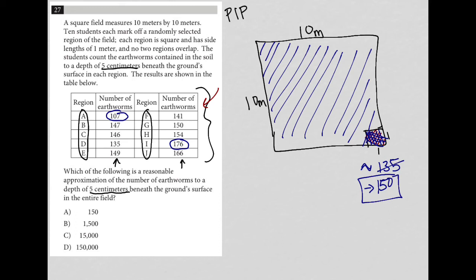So the area for the entire field will be 10 by 10, which is 100 square meters. So if there's 150, if 150 equals one square meter, then how many would we expect to find in 100 square meters?